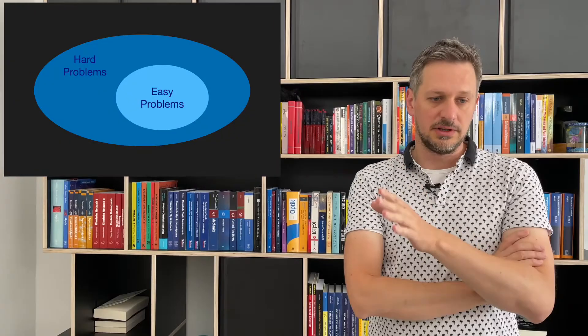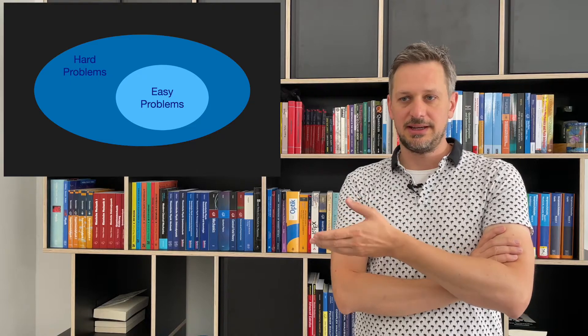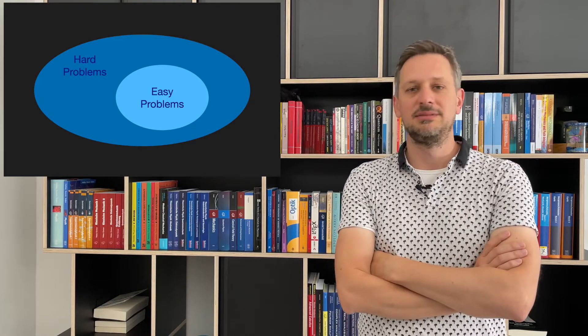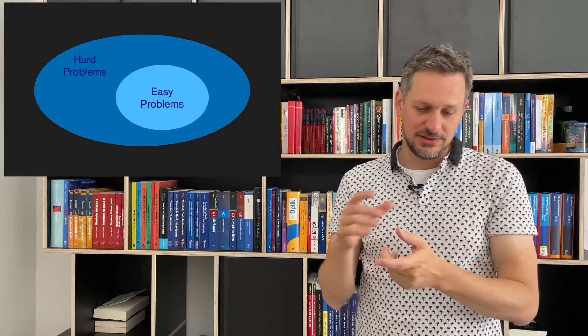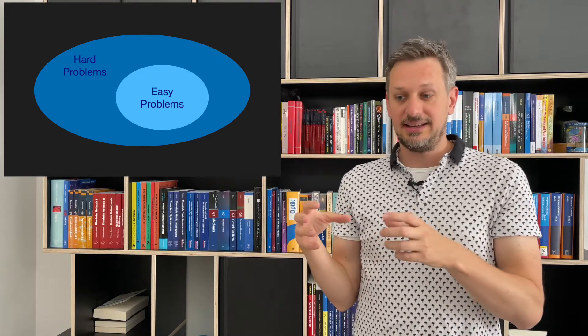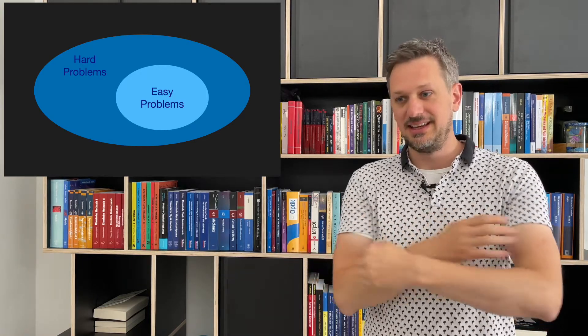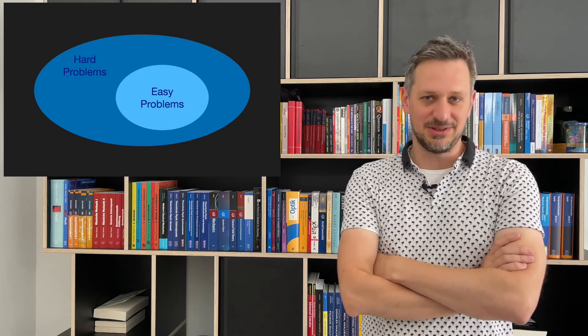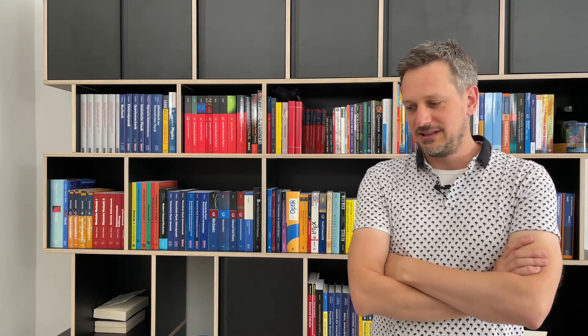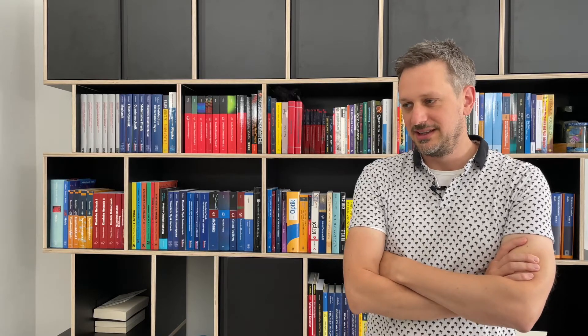In very simple terms, there are tasks that computers can perform efficiently — these are called easy — and there are tasks that computers cannot perform efficiently — these are called hard tasks, and they require exponential resources. For example, if you take two prime numbers and multiply them, that's an easy task. On the other hand, if you start with a result and ask what are the two prime numbers that multiplied give this result, that's an extremely hard task to compute. The fact that prime factoring is so hard to do is the basis for our most commonly used encryption algorithm, called RSA, which is used to encrypt all manner of data from credit card information, emails, and data stored by corporations, governments, etc.